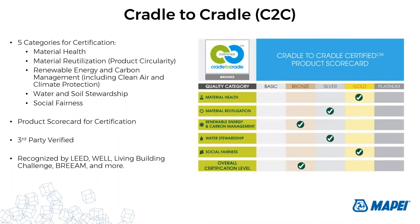Cradle to Cradle is probably the most ambitious certification program. Its framework is structured around five quality categories, making it a multi-attribute report. A product is assigned an achievement level — basic, bronze, silver, gold, or platinum — and the product's lowest category achievement represents its overall certification level. The standard encourages continuous improvement over time by awarding certification on the basis of ascending levels of achievement. Cradle to Cradle also has a material health certificate that recognizes performance in the material health category. It is recognized by LEED, WELL, Living Building Challenge, BREEAM, and many more green building programs.